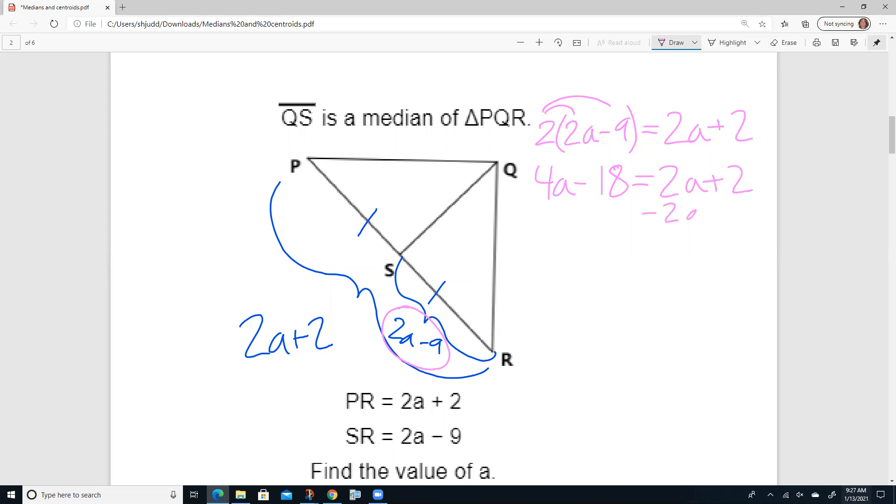Let's go ahead and minus 2a from each side. Remember, we're just going to use inverse operations to solve this algebraic equation. Let's add 18 to each side because we're trying to isolate a. And 2a is equal to 20. Divide by 2. And we get that a is equal to 10.